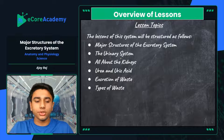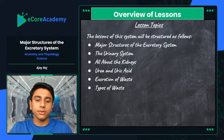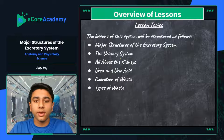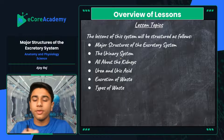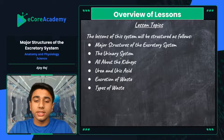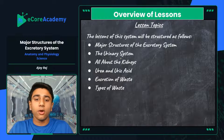The lessons of the system will be structured as follows: we'll have the major structures of the excretory system — what we're going over today. Then we have the urinary system, a separate counterpart of the excretory system. We'll have lessons all about the kidneys, which are probably the highlight of the excretory system. Then we have urea and uric acid, very important in breaking down materials into urine. Then the excretion of waste — how fluid and gaseous waste exits the body. And finally the different types of waste: toxic waste, byproducts, and excess substances that need to be excreted.